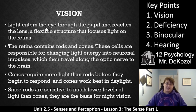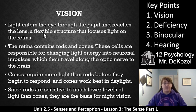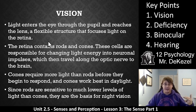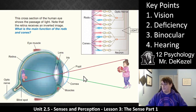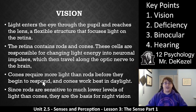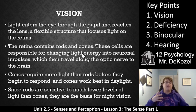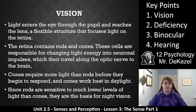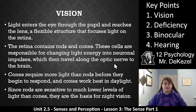So, vision. Light enters the eye through the pupil and reaches the lens — essentially it goes through the hole in your eye and goes through a clear part. It is a flexible structure, and it focuses the light on the retina, which is the back of the eye. The retina contains rods and cones, which actually transmit impulses of light to your brain. It takes in the stimulus and sends that impulse to your brain through the optic nerve.